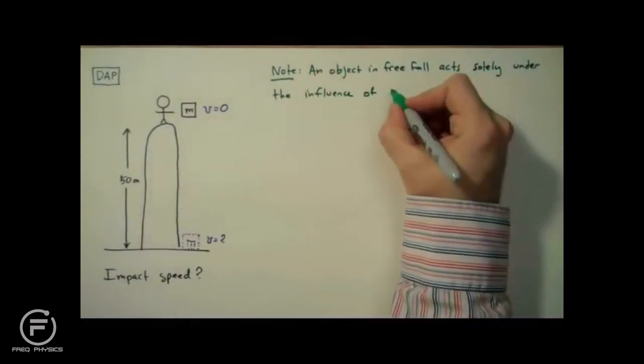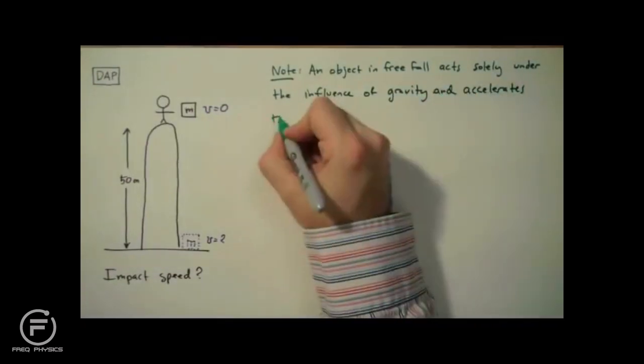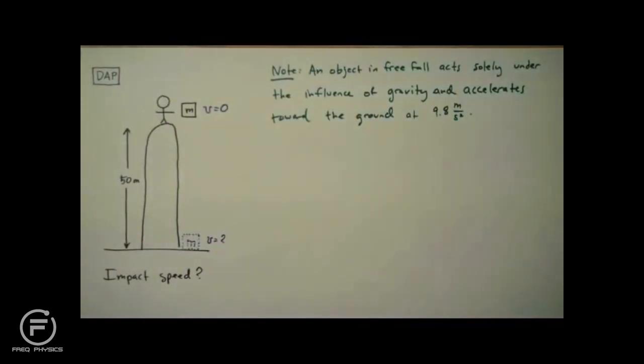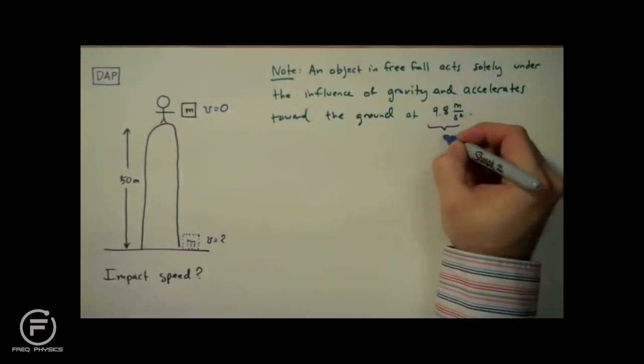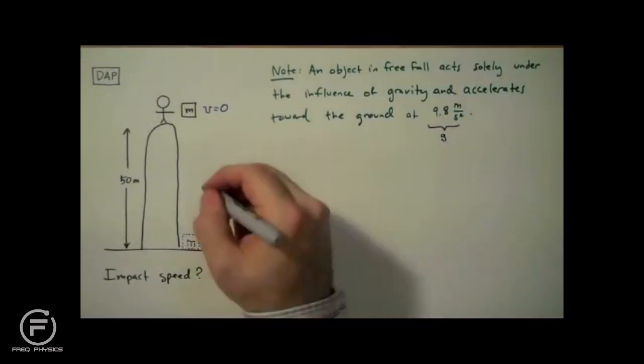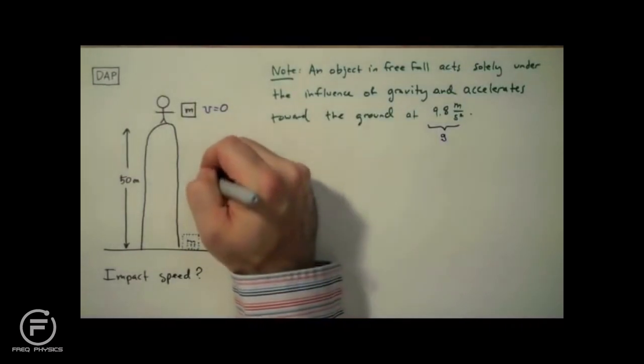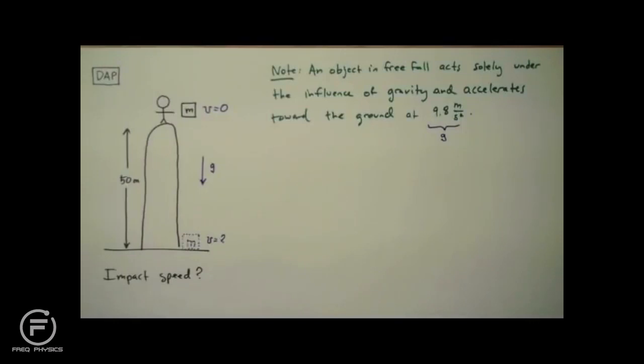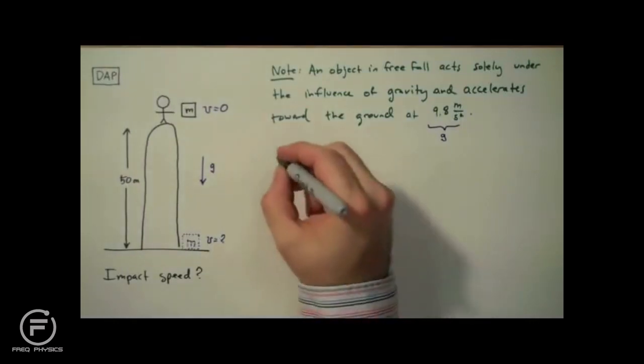And an object in free fall acts solely under the influence of gravity and accelerates toward the ground at a rate of 9.8 meters per second per second. By the way, this number is so important we give it its own constant, G, for gravitational acceleration. So I'm going to indicate that acceleration right here. And now we have enough information to solve our problem. We just need to select the right equation to do so.